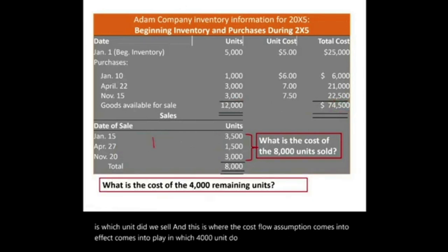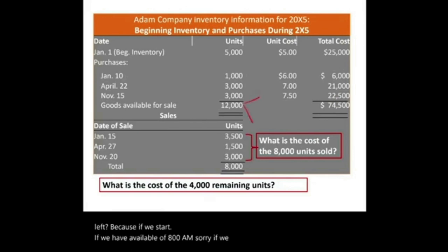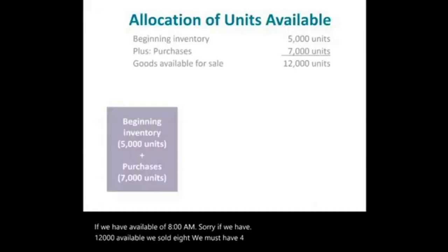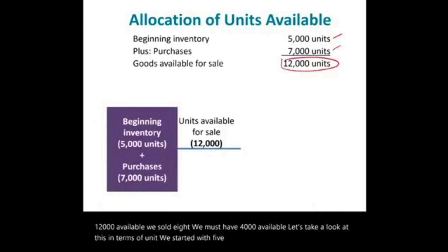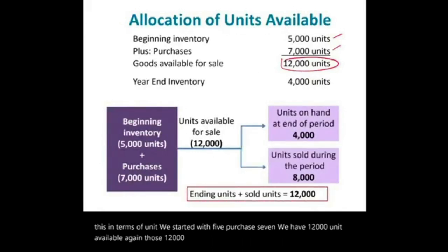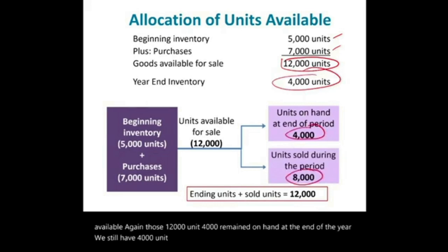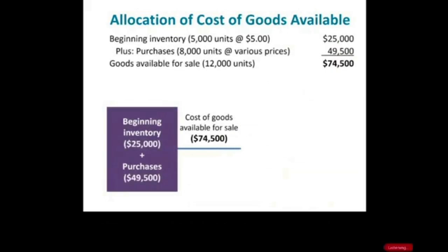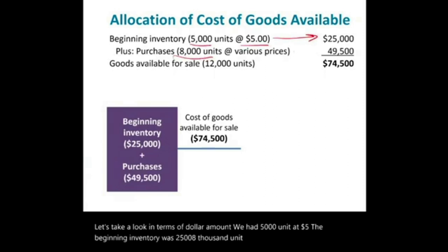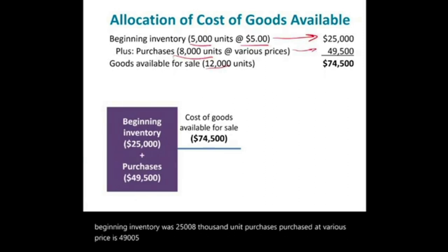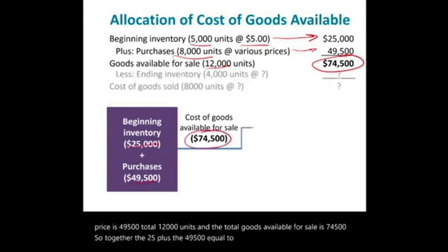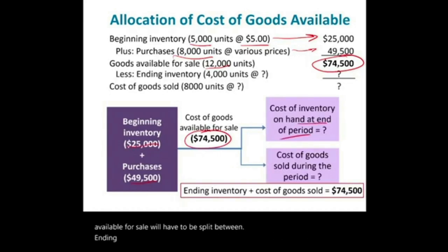Which 4,000 units do we have left? If we have 12,000 available and sold 8,000, we must have 4,000 remaining. In terms of units: started with 5,000, purchased 7,000, have 12,000 available — 4,000 remain on hand, 8,000 sold. In terms of dollars: 5,000 units at $5 gives beginning inventory of $25,000; plus $49,500 in purchases for 8,000 units; total 12,000 units at $74,500 goods available for sale. That $74,500 will be split between ending inventory and cost of goods sold. You'll see the $74,500 and 12,000 units repeatedly throughout this recording.